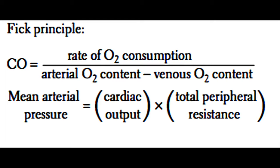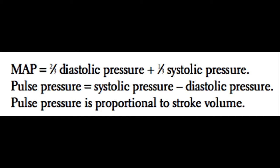Cardiac output can also be used in a modified form of Ohm's law, shown here: mean arterial pressure equals cardiac output times total peripheral resistance. The formula for mean arterial pressure is equal to two-thirds times the diastolic pressure plus one-third times the systolic pressure, because the cardiac cycle is made up of two-thirds diastole and one-third systole.